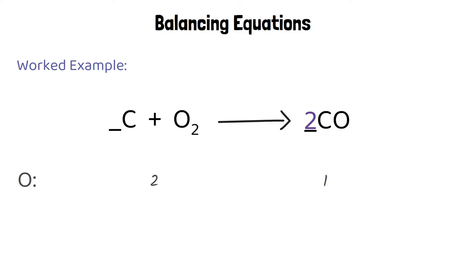If I've got two molecules of something with one atom of oxygen in, I now have two atoms of oxygen in total. That means the numbers of oxygen in the reactants and the products are now balanced. I'll then move on to checking the carbon atoms. There's one in the reactants and because I've got two lots of CO, I've now got two in the products. This isn't balanced, but if I put the number two before the carbon in the reactants, I now have two atoms of carbon in the reactants and that will make this balance.